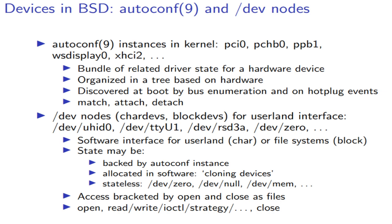On the other side, there are user-land interfaces — slash dev nodes. In ls /dev you'll find a large number of files. On NetBSD and OpenBSD, a large number of files; on FreeBSD there's devFS so it's limited to drivers you have. You have names for files you can open: /dev/uhid0 for a USB human interface device, /dev/ttyu1 for a USB serial console, rsd3a for the raw SCSI disk third partition a, or /dev/zero — a pseudo device that returns zero when you read from it. There are character devices and block devices depending on whether you're talking to user-land programs or file systems.